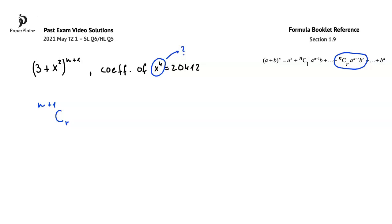A, the first term in the expansion is 3, and this is raised to the power of n minus r, so in our question, to the power of n plus 1 minus r. Term b here is x squared, and this is raised to the power of r.